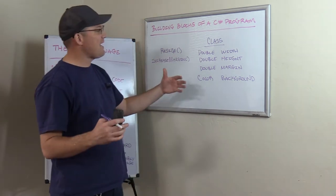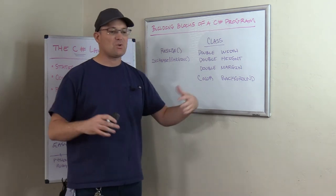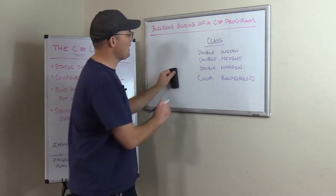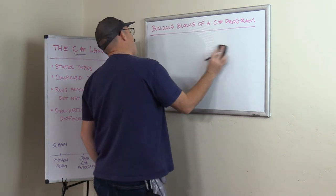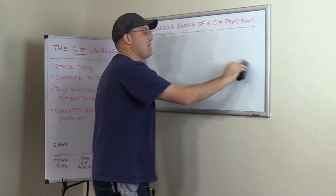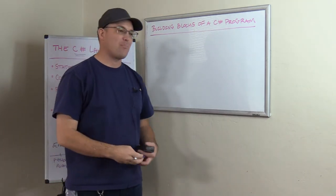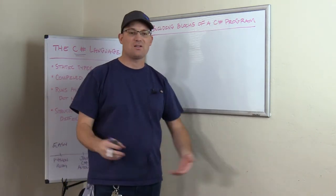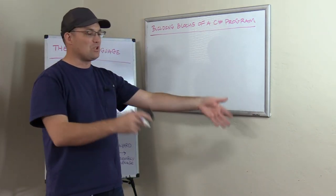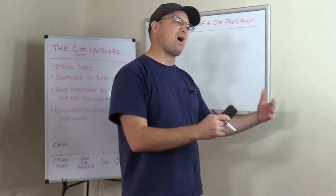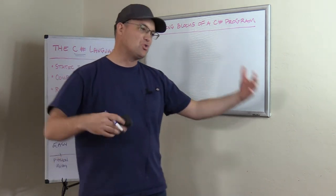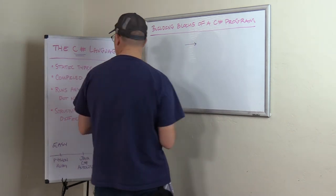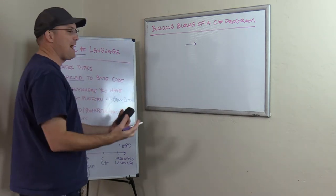So you get the idea — a class is just a template to make an object, and we use objects to represent data in a computer: a page, a color, a line, a piece of text, a font. To review: every C# program has a main method that the operating system executes to start the program. The main method creates objects and does stuff with them. Classes are templates used to make objects. Objects have data — either private member variables or public properties — and they have methods that do something to that data.